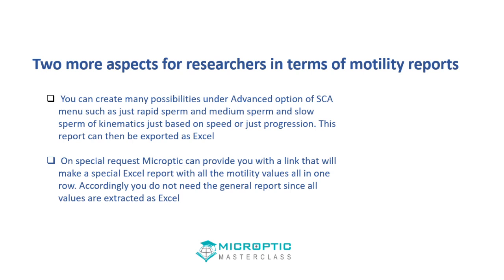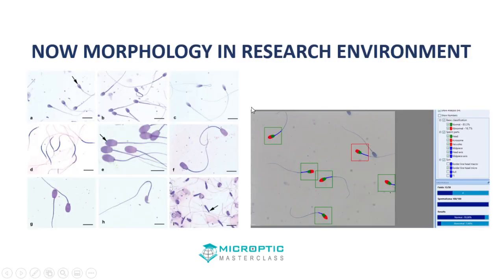There are two more aspects for researchers which are really very important. The first relates to the advanced option of SCA, where in the menu there is a possibility of getting your own permutations of rapid, medium, and slow sperm — surprisingly few people actually use this option. The second: on request, you can get a special link from MicropTIC whereby a special Excel report is provided that calculates all motility values all in one row, so you don't have to extract this from your file.